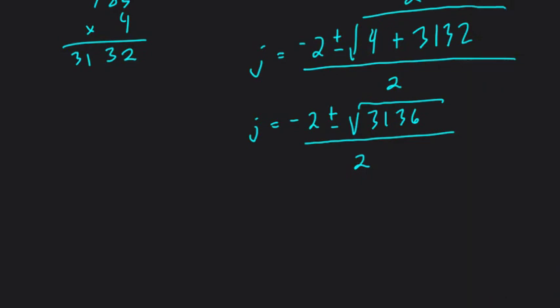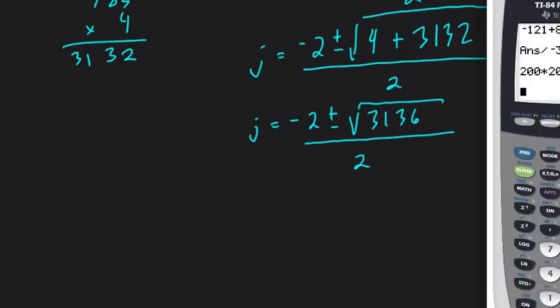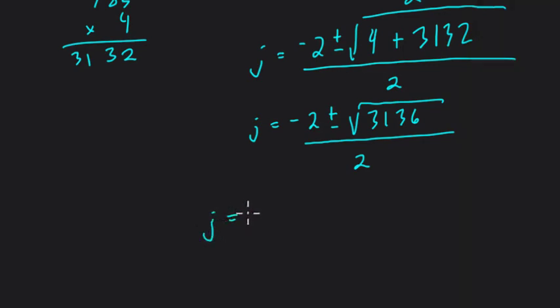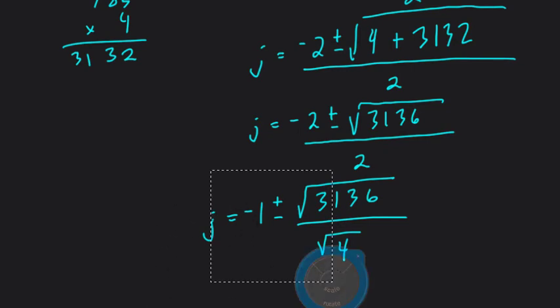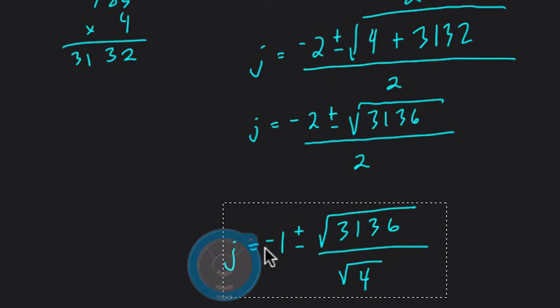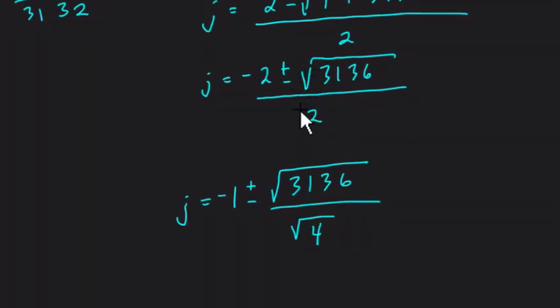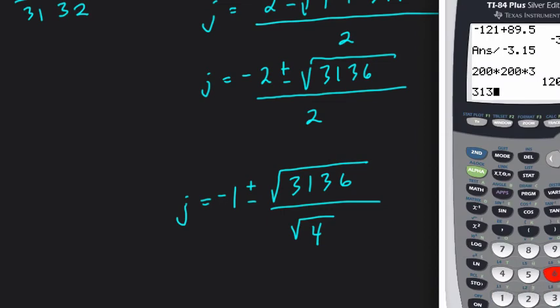Okay, we're almost done. So we can definitely break this down with a calculator or without. Here, we're dividing everything by 2. So negative 2 divided by 2 is negative 1. So J equals negative 1 plus or minus. And here, to break this down, I'm going to write the square root of 3,136 over the square root of 4. In other words, I want to divide square roots to see if I can reduce. So do 3,136 divided by 4, we get 784.